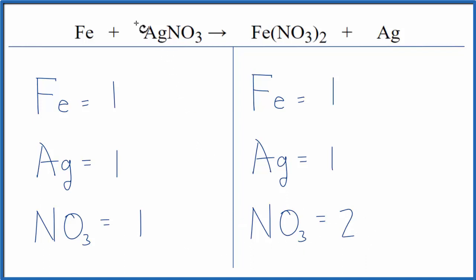If we put a two, our coefficient in front of the silver nitrate, AgNO3, this two applies to everything. So we have the 1NO3 times the 2, so we have two of those, so we've balanced the nitrate ions, the NO3s, and then the silver, we have 1 times 2, that'll give us two silvers.